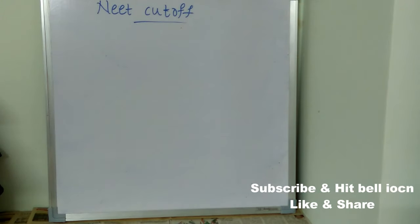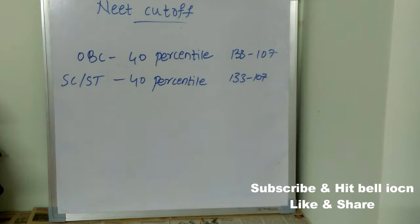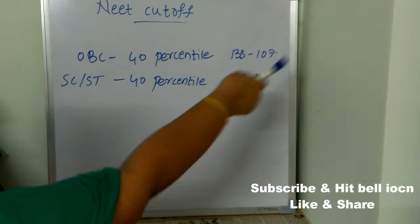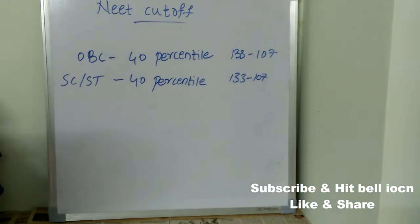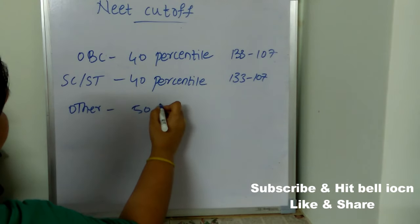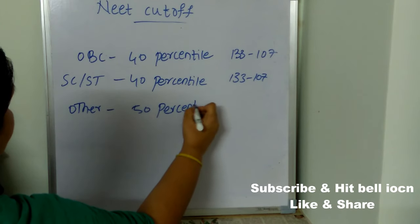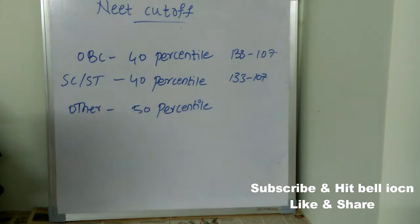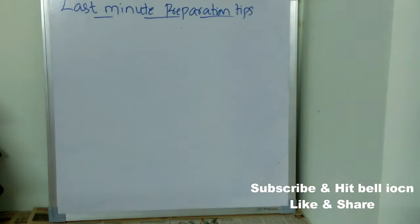Now let's see the NEET cutoff category-wise for this year. For OBC and SC/ST categories, you must get at least 40 percentile, with marks in the range of 133 to 107. For general and other categories, the cutoff is at least 50 percentile.